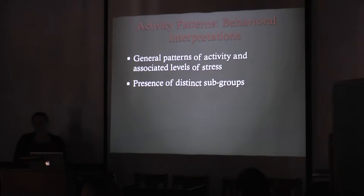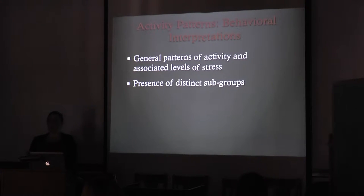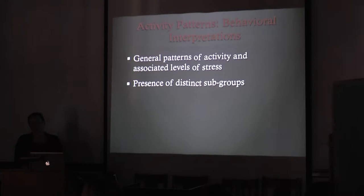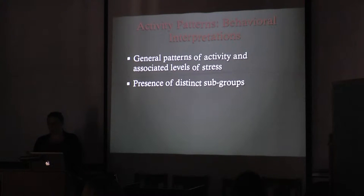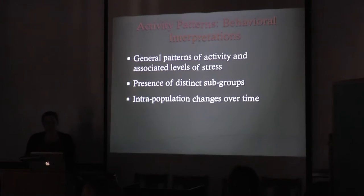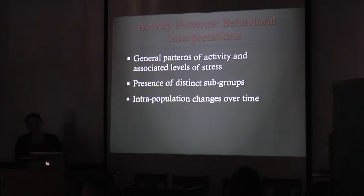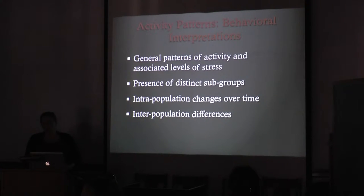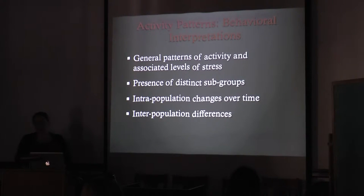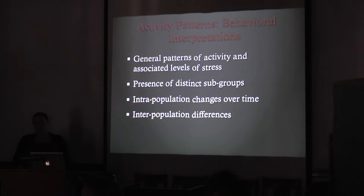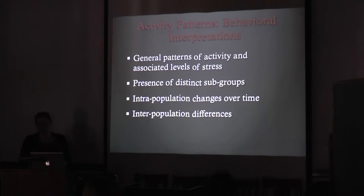However, both individual and population level differences can be identified through the analysis of morphological variability, which may illuminate facets of social organization such as sex and age-based divisions of labor, or the presence of distinct subgroups. Interpopulation changes over time can also be examined and may suggest changes in activity patterns, while interpopulation comparisons can help clarify the role of environment on activities as reflected in morphological variability.